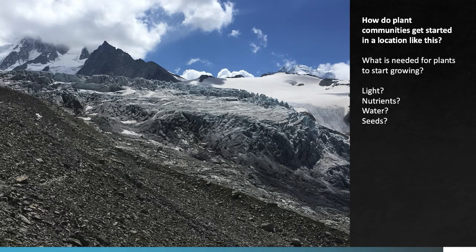If that process starts in a site like this, and you came back to the same site 20 or 30 years later, you would likely see shrubs. And 20 or 30 years after that, there would likely be trees or shrubs depending on the elevation. And this is a process that we call primary succession.